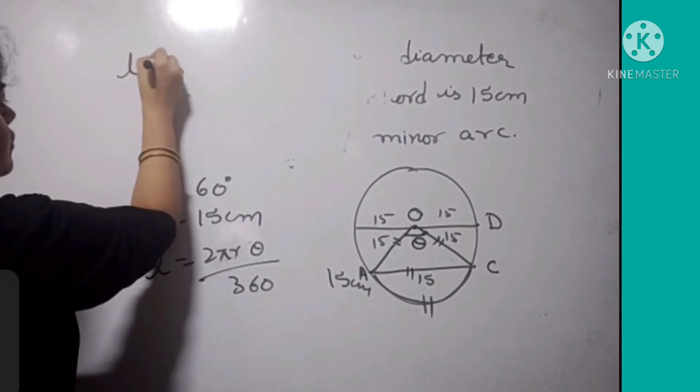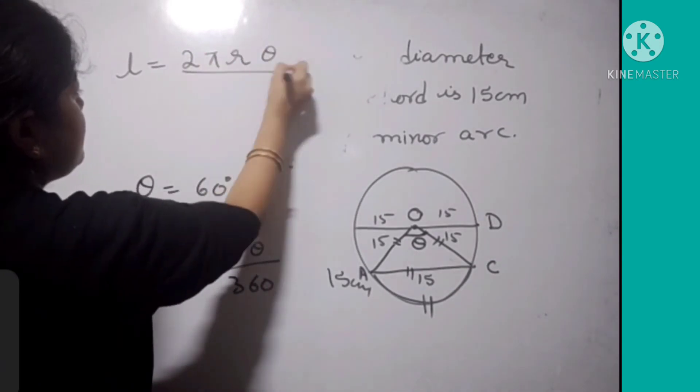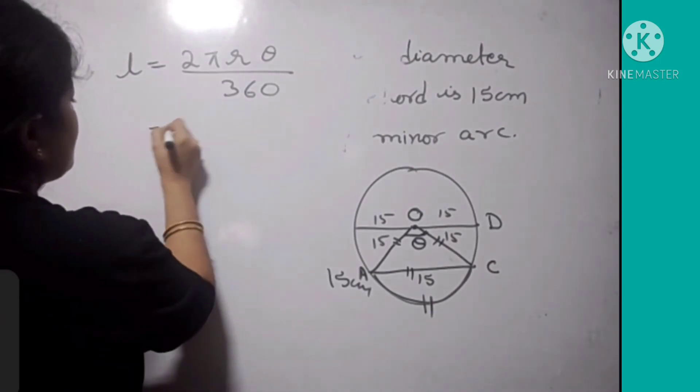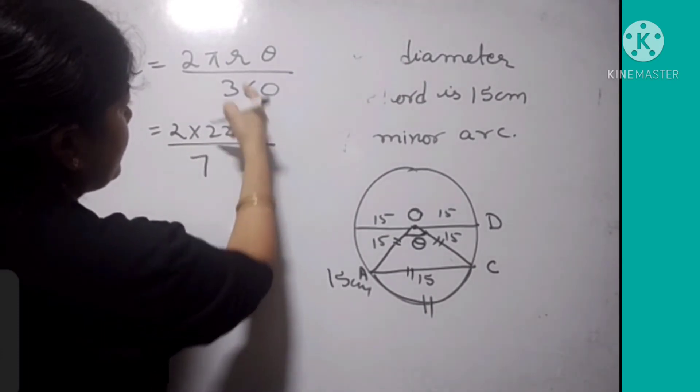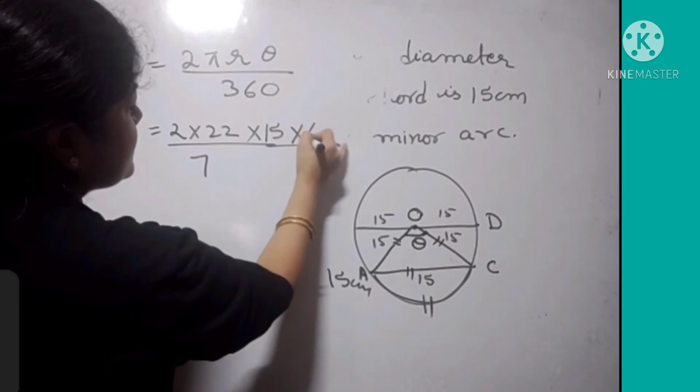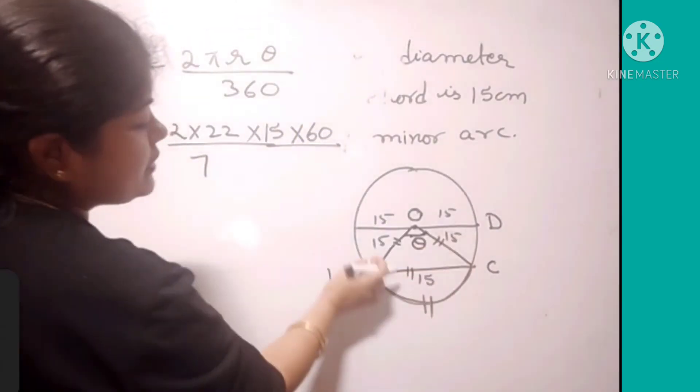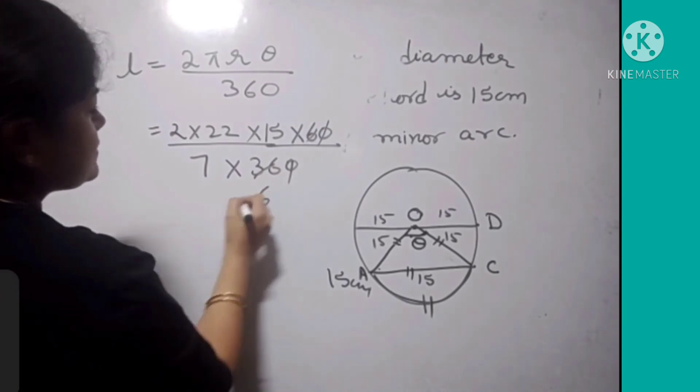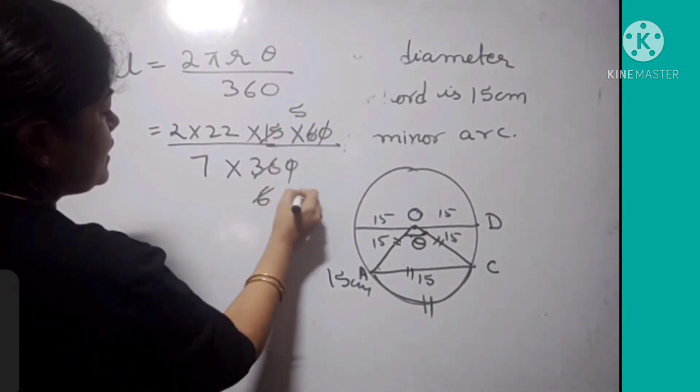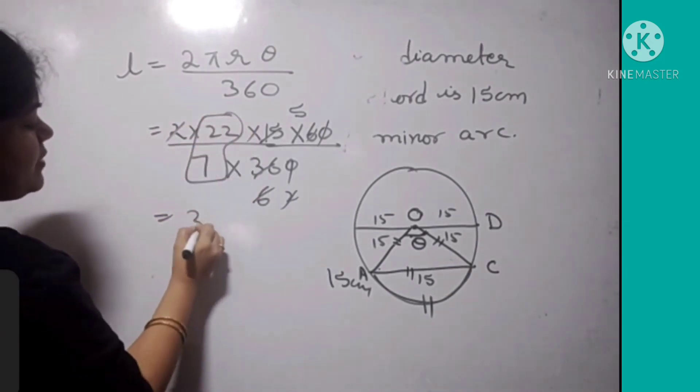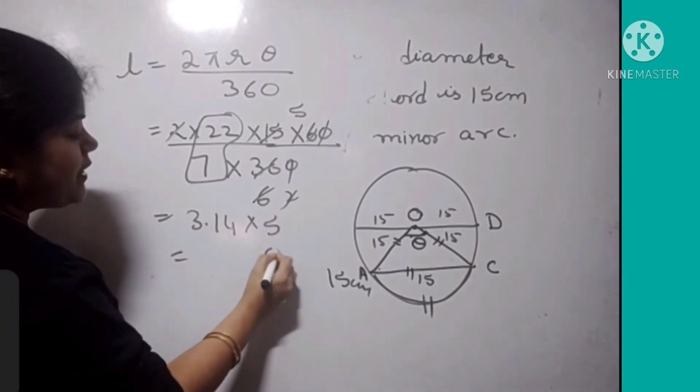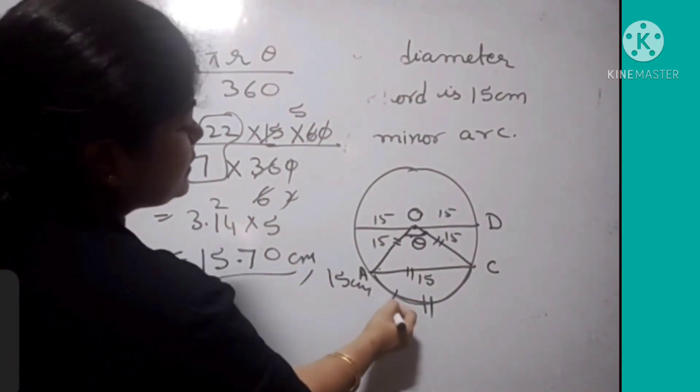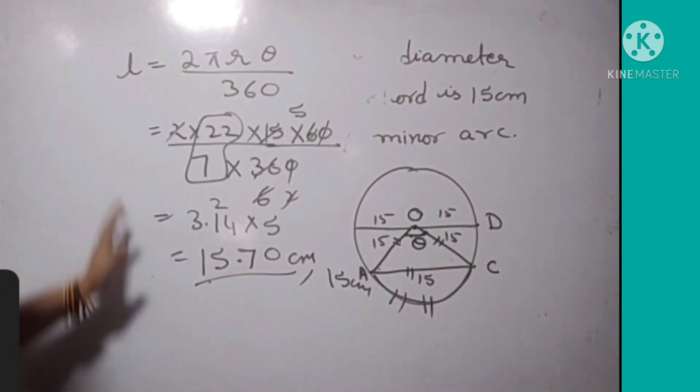L equals 2πR theta over 360. Now I'm going to substitute all the values: 2 times 22/7 times 15 times 60 over 360. Because all three sides are equal in the equilateral triangle, each angle is 60 degrees. After cancelling and simplifying - 22/7 as 3.14 times 5 - we get 15.7 cm as the length of this minor arc. So in this way we can solve lots of questions using these formulas.